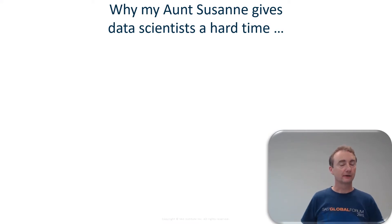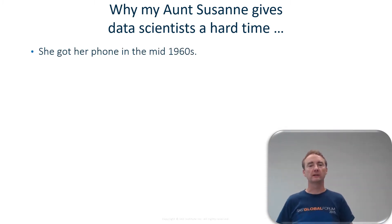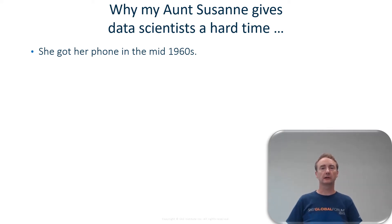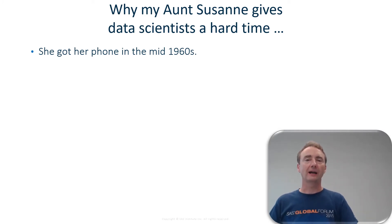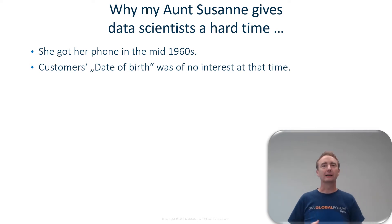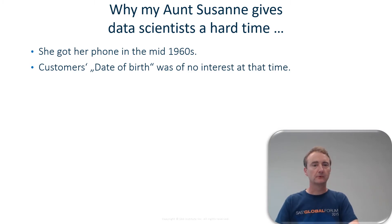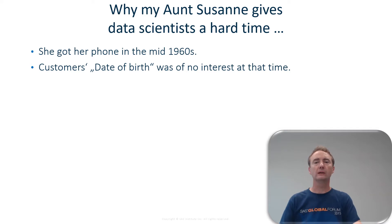Who is my aunt Susanne and why does she give us, the data scientists, a hard time? My aunt Susanne is already quite an elderly lady. She got her phone in the mid of the 1960s and at that time, in the country where my aunt lives, you were not a customer to your telephone provider — you were an applicant. You were hoping to get a phone connection, waiting for a long time, and happy if you finally got one. Consequently, customer data, analytic customer relationship management, knowing the customer was not a big topic. They only needed the billing address to send the bill to. Data like date of birth or gender were of no interest because no one needed them to segment customers.